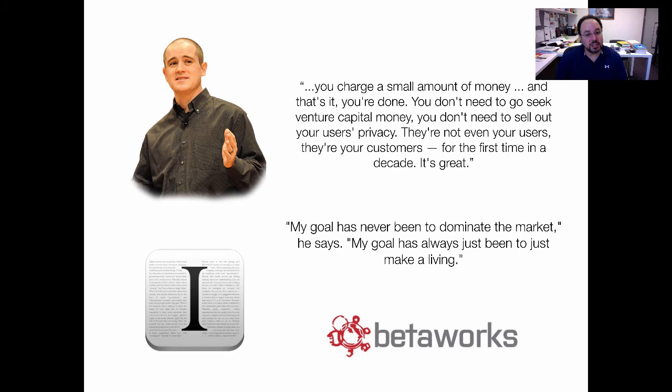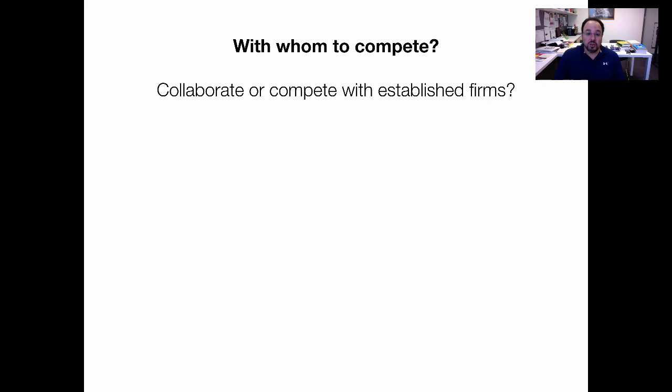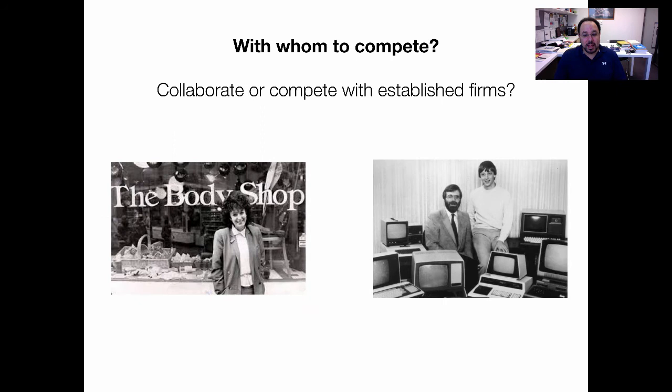The second dimension we need to talk about is with whom to compete. Do you collaborate or compete with established firms? That's a choice — you don't have to compete with them. Compare the Body Shop with Microsoft. The Body Shop chose to take on established cosmetic retailers in all their forms. Microsoft did deals with established firms — famously with IBM — which gave it a leg up. Microsoft's first job was not dealing with end customers; it was supplying an operating system to IBM.